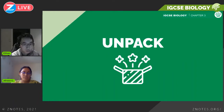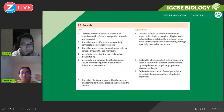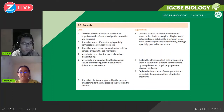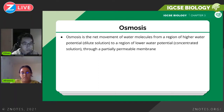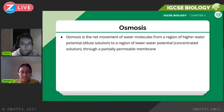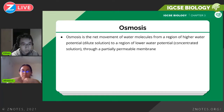Now we have osmosis. In this part of the syllabus you need to know what osmosis is, how to define it, and the role of water, because osmosis is all about water. Osmosis is the net movement of water molecules from a region of high water potential — a dilute solution — to a region of lower water potential — a concentrated solution — through a partially permeable membrane. You need to mention both the net movement of water and the partially permeable membrane to get two marks.